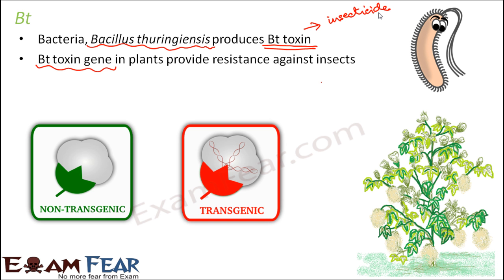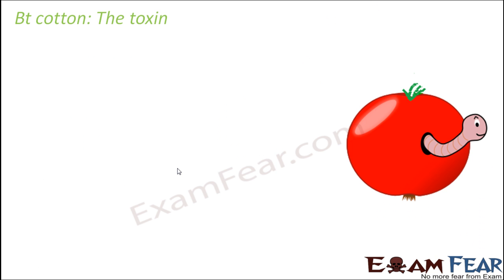One such example is Bt cotton. Bt cotton is transgenic because it is genetically modified, and it has inbuilt resistance against insects, so it will not be spoiled by insects. Normal cotton, on the other hand, is easily spoiled and damaged by insects and requires external application of insecticides to survive. This is the advantage of Bt cotton over normal cotton.